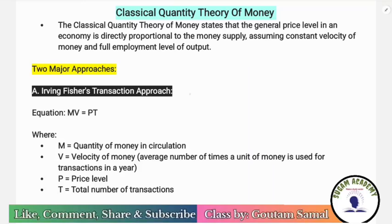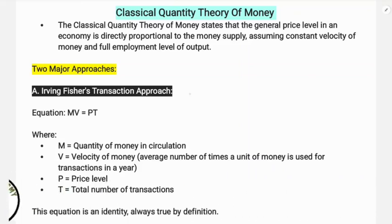So what is this classical quantity theory of money? Basically this has two approaches. The first one is the transaction approach and the second one is the cash balance approach. The transaction approach was developed by Irving Fisher.